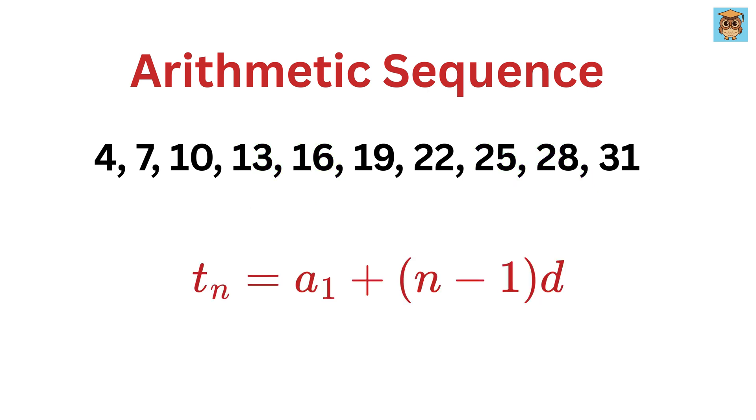Now the following simple formula is widely used when dealing with sequences. The formula to find the nth term of an arithmetic sequence is tn equals a1 plus n minus 1 times d. Here a1 is the first term of the sequence, which is 4 in this case.